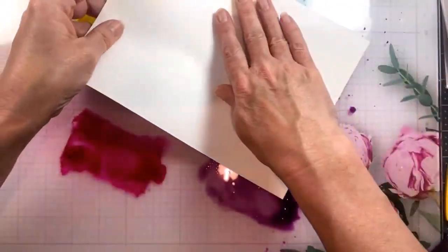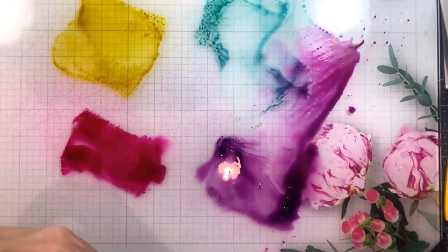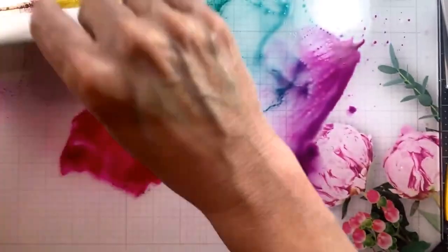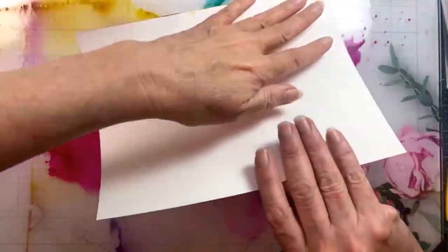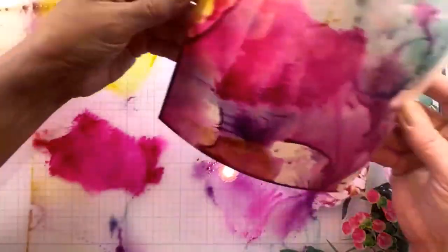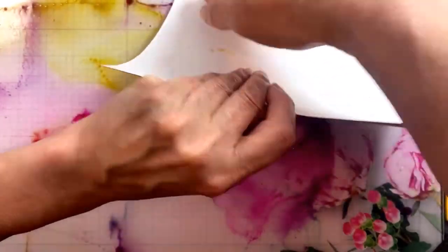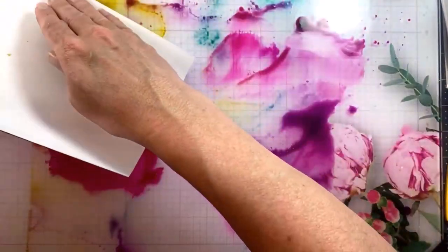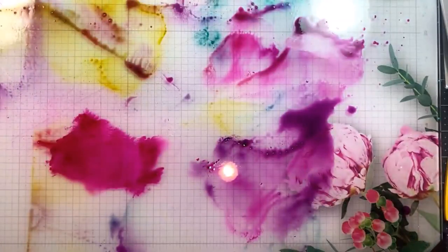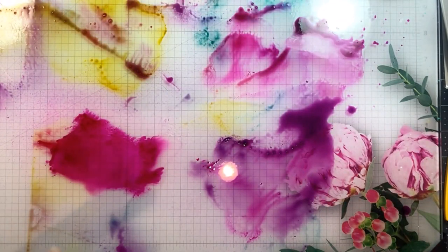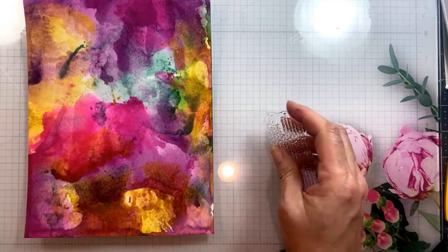Now I have a piece of Bristol Smooth that, after I spray these dye-based inks—and look how vibrant and beautiful they are—I'm just picking this up with a large sheet of this Bristol Smooth paper. I wanted Bristol Smooth versus watercolor paper because I'm going to be stamping on here and I wanted a smooth surface.